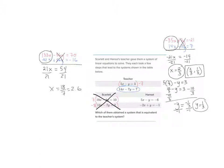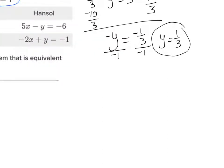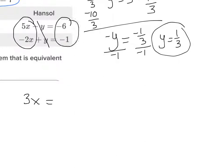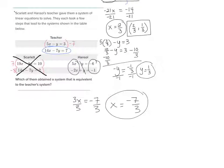Now let's do Hansel's. Looking at Hansel's system, I've already got a negative Y in one equation and a positive Y in the other, so they'll just cancel when I add them up. 5X and negative 2X is 3X, and negative 6 plus negative 1 is negative 7. Dividing 3 on both sides, X equals negative 7 thirds. But we need X to equal 2 thirds, and this isn't 2 thirds — so Hansel's is not equivalent either.